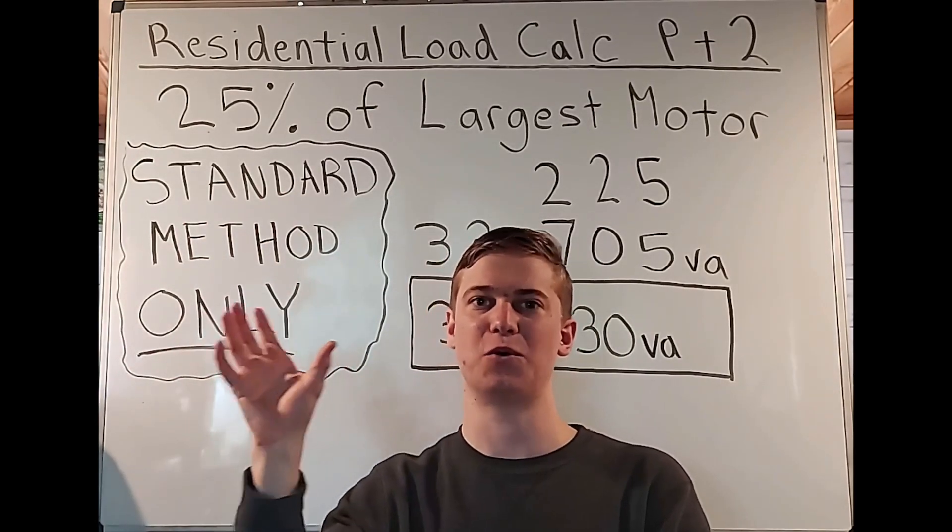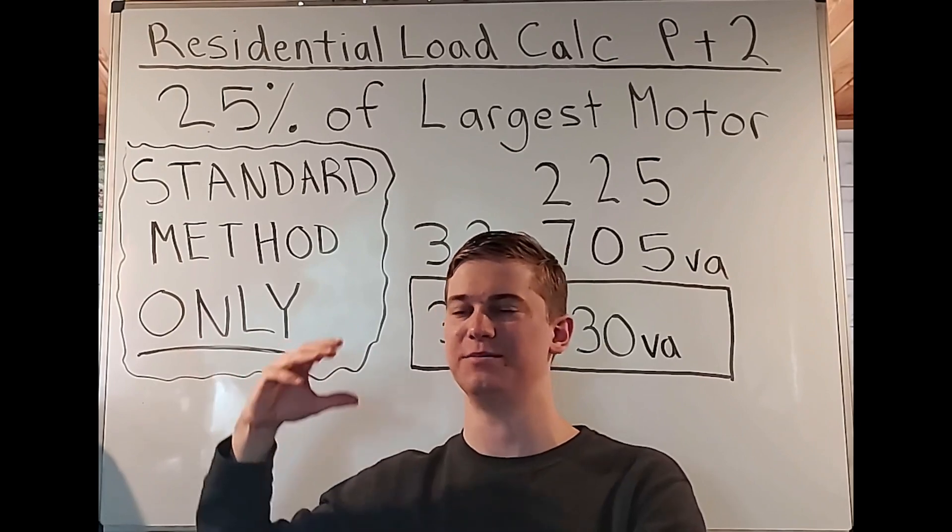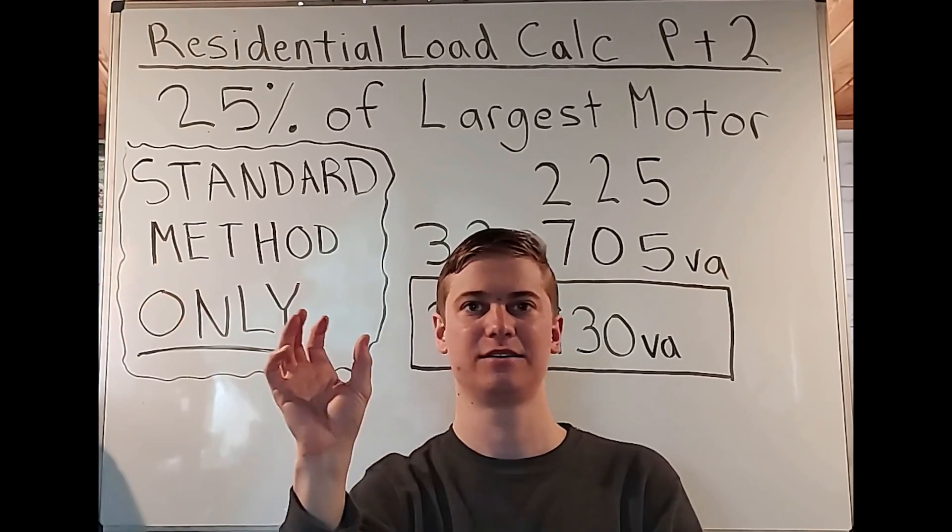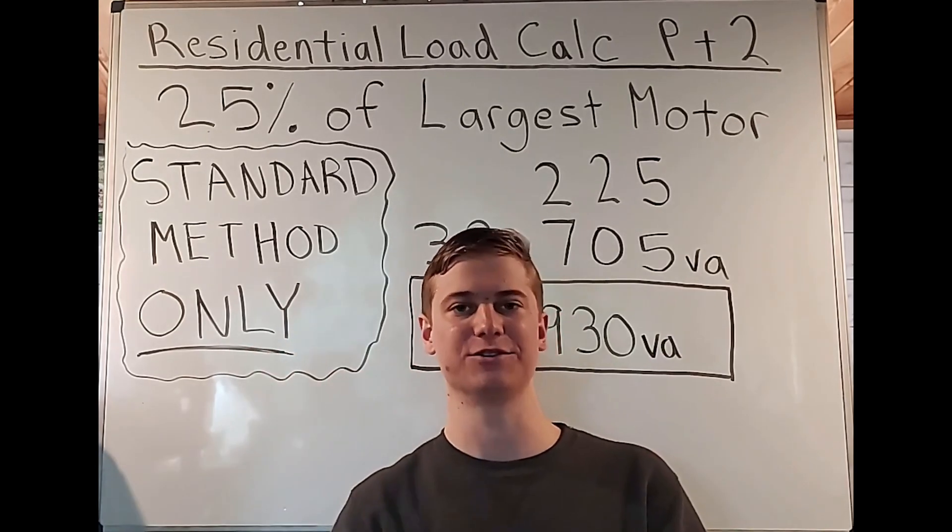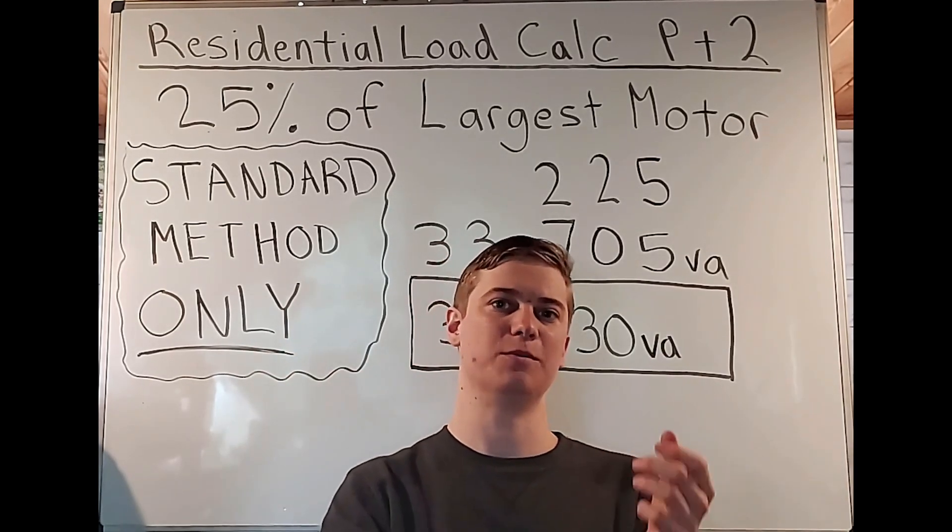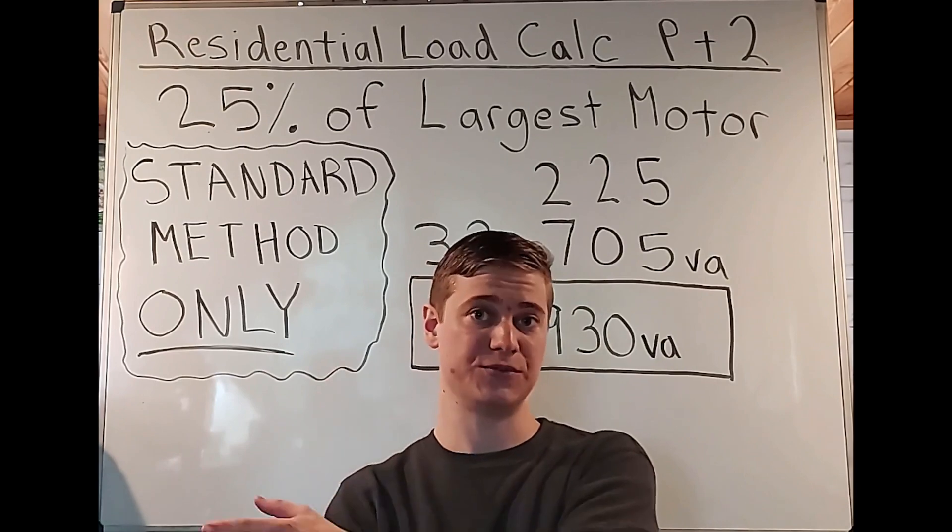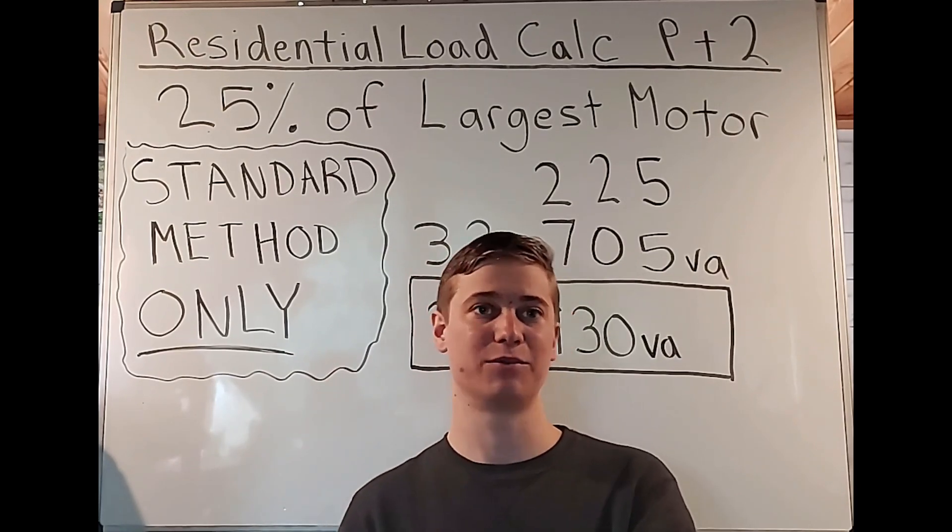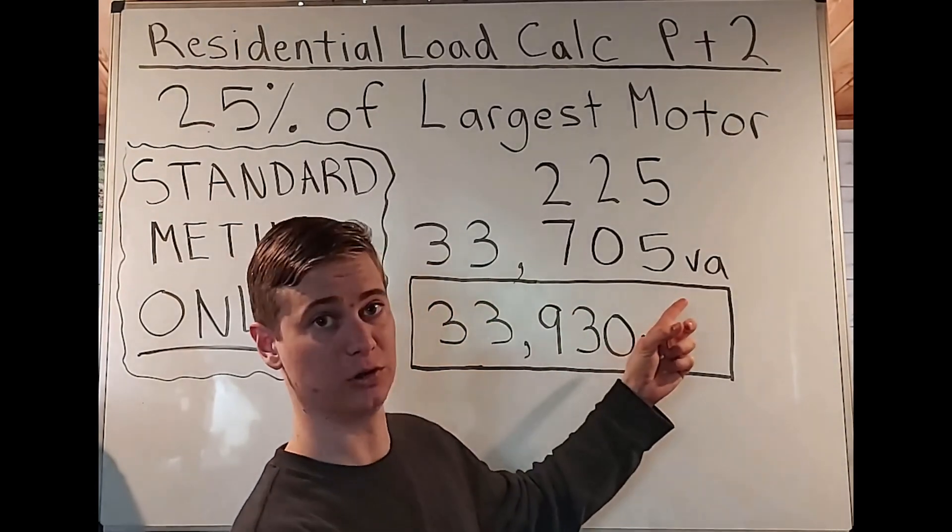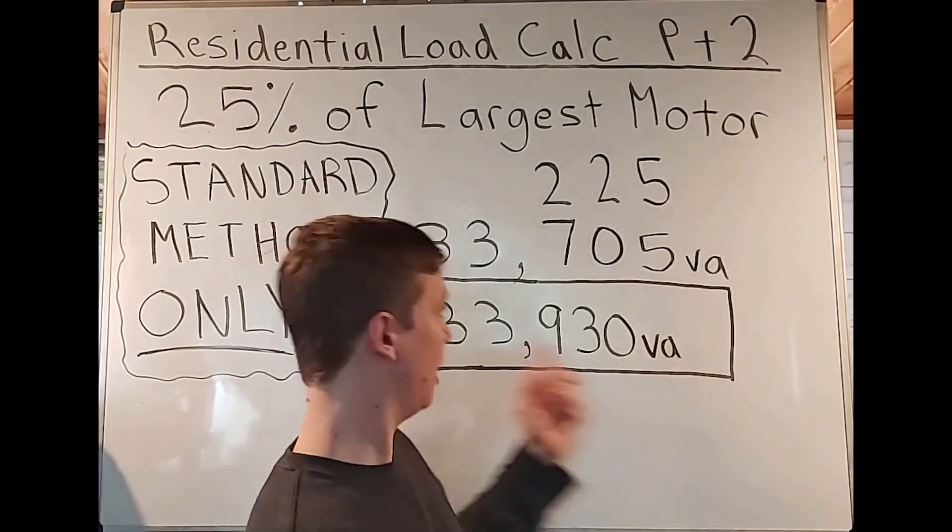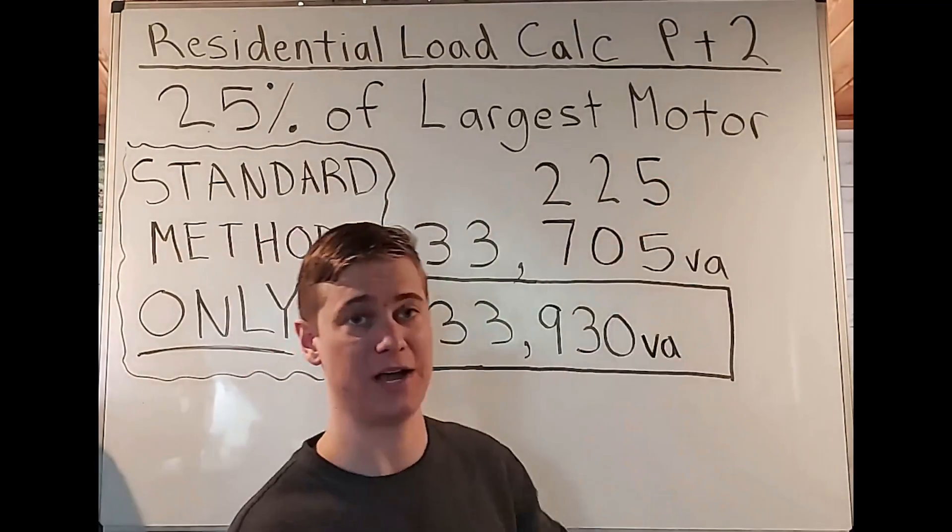Not just the one that has the largest volt amps and contains a motor, but the one with the largest motor. We're going to take that at its full load. Whether we did the demand factors with the four or more or not, we're going to take it at face value without any demand factors. And then we're going to multiply that by 0.25.